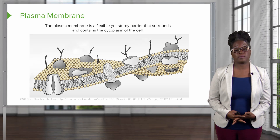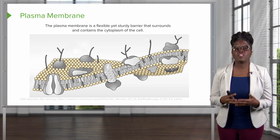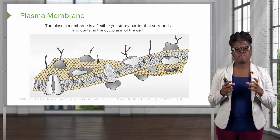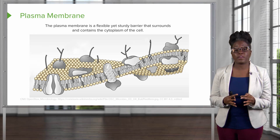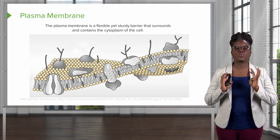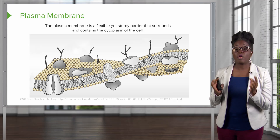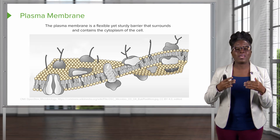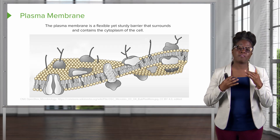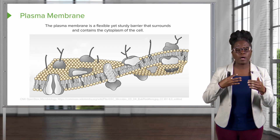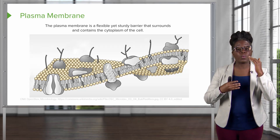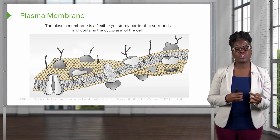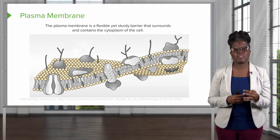Let's start with the plasma membrane. The plasma membrane is a flexible yet sturdy barrier that's going to surround the inside of the cell, and it's going to provide a barrier between the external and internal environment of the cell.